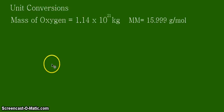Hey there, welcome to another unit conversion tutorial video. This video is actually a follow-up of the previous video on the mass of oxygen. Remember that we calculated that the mass of oxygen in the whole ocean is 1.14 times 10 to the 21 kilograms.